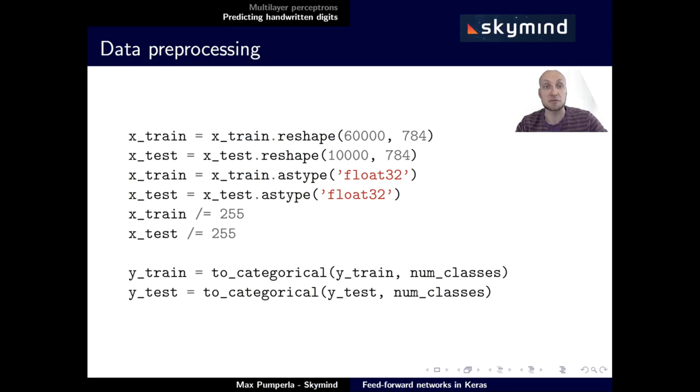Next up is data preprocessing. I mentioned before that the MNIST samples are 28 by 28 images. We need to flatten them to a 784 vector to feed them into a dense layer. So, first we're going to reshape both train and test data, then set them to float type, and divide them by 255 to arrive at values that lie between 0 and 1.